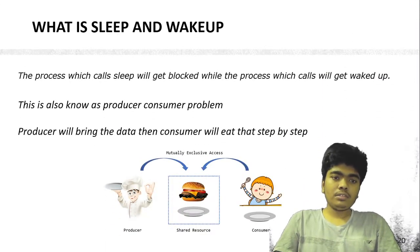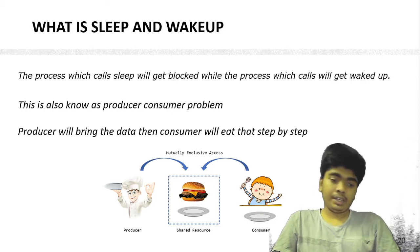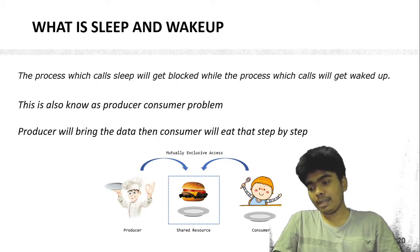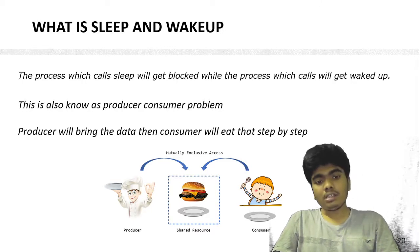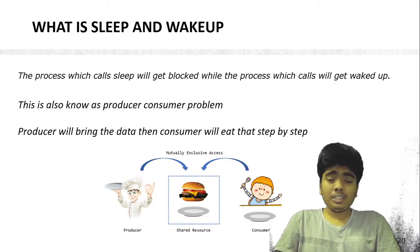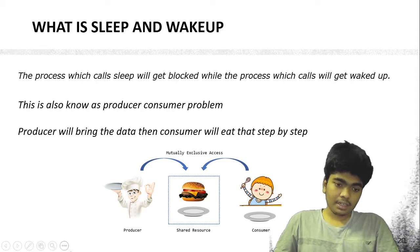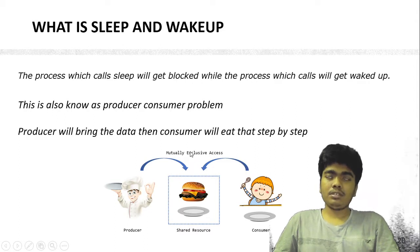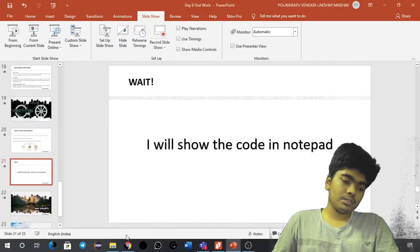Now let's discuss sleep and awake. The process which calls sleep will get blocked, and the process which calls wake up will get woken. This is also known as the producer-consumer problem. The producer brings data and the consumer eats it step by step. Let me show some code in notepad.